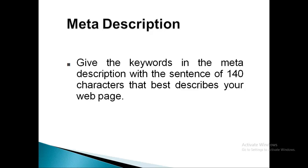Meta description is the part that displays two lines on Google search results about any topic or niche. Whenever we write a blog post or any content on a web page, we must add a related meta description in our SEO and include our keywords in it. Meta description can be up to 140 characters and it should best describe your web page.